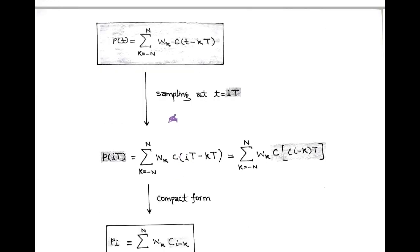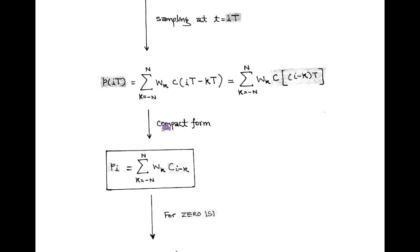After performing convolution, we take sampling at T equals IT, where T is symbol duration. And P(T) gets converted into sampled pulse function P(IT), that is equal to summation WK C within bracket I minus K into T. For our simplicity, we can write this expression in compact form, denoted by PI equals summation WK C subscript I minus K, taking limit K equals minus n to plus n.